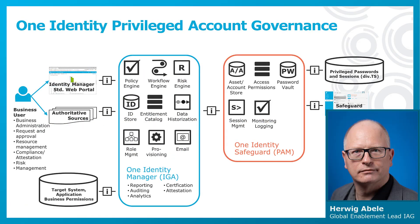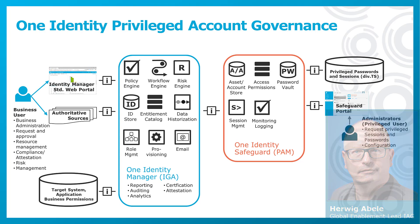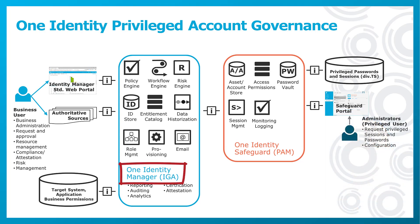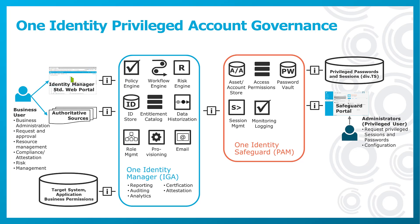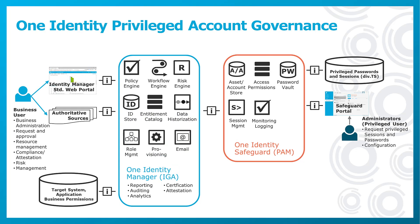One Identity Privileged Account Governance, or PAG. This is a joint venture out of two products: One Identity Manager and One Identity Safeguard. Identity Manager gets connected to Safeguard by installing a PAG module. Once both systems are connected, all the benefits exist to support Safeguard. In demonstrations this is typically not shown, because it requires a full installation of both products together in one large demo environment, which is a lot of preparation work.